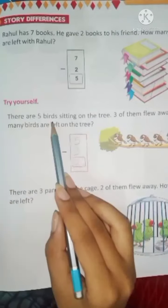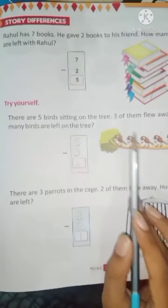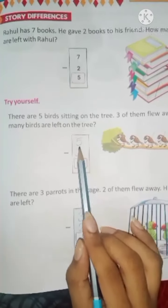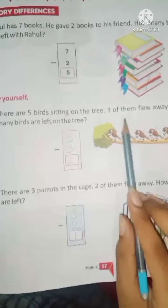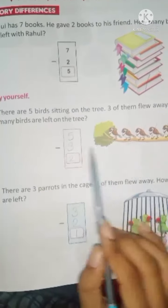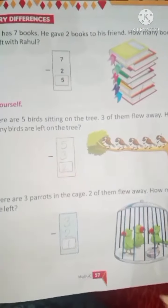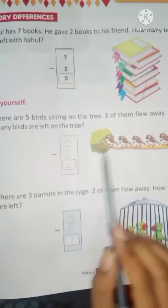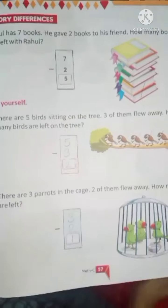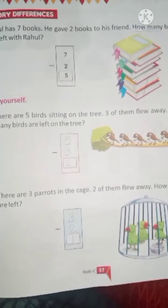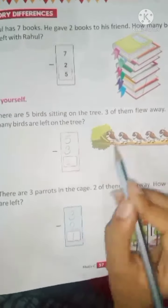Now, try yourself. There are 5 birds sitting on the tree. A tree paas kitni birds bachhi thine? 5. So, write 5 here. 1, 2, 3, 4, 5. 3 of them flew away. Just means it 3 birds ura gai. So, here we will write minus 3 and cut kar dhenge 1, 2, 3 birds.